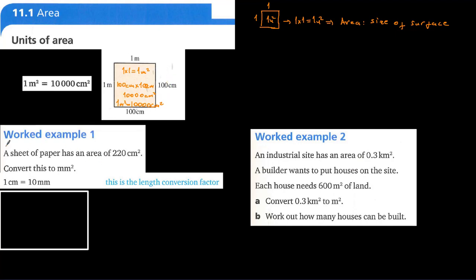In this exercise, a sheet of paper has an area of 220 centimeters square. We need to convert this to millimeters square. Let's remember the length conversion factor: one centimeter equals 10 millimeters.